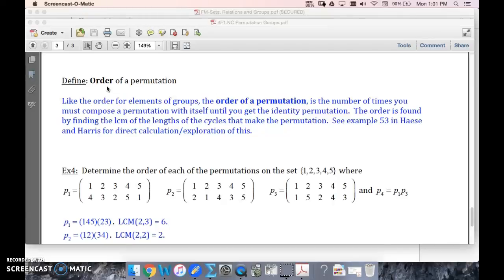All right, now we're defining order of a permutation. Like order for elements of groups, the order of a permutation is the number of times you have to compose a permutation with itself until you get back the identity permutation.